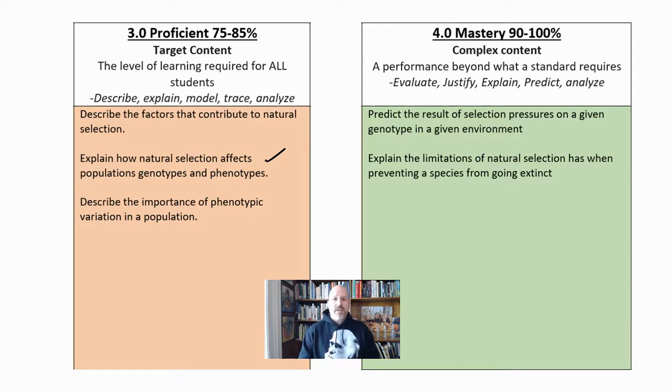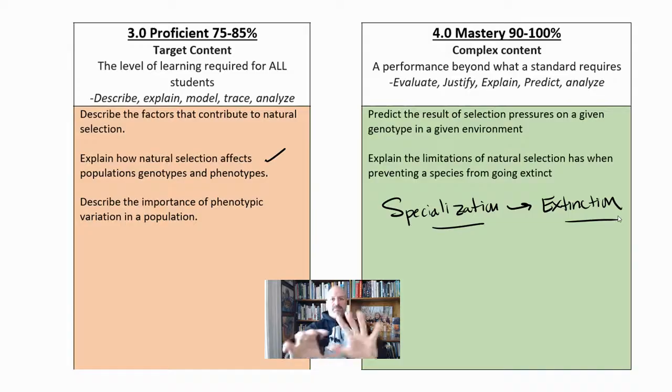Explain the limitations of natural selection has when preventing a species from going extinct. That's something for you to think about. It's often said that specialization leads to extinction. We'll talk about this in class, but that's something I want you to think about. How can natural selection, the beauty and the forming of natural selection actually be bad for the species? I've given you all the pieces you need to answer it in this video. OK, I hope it helped. If you have any questions, you know how to get ahold of me and I'll talk to you soon. Thank you. Bye.